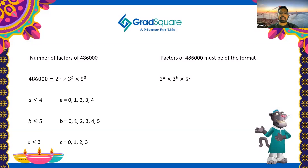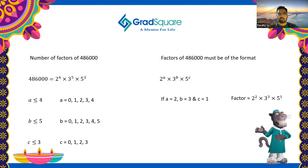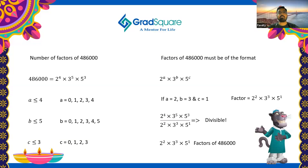So a must be ≤ 4, b must be ≤ 5, and c must be ≤ 3. Let's verify with an example: taking a = 2, b = 3, c = 1, the factor is 2² × 3³ × 5¹. Dividing 486,000 by this factor, everything in the denominator cancels from the numerator, confirming it is divisible. So 2² × 3³ × 5 is indeed a factor of 486,000.